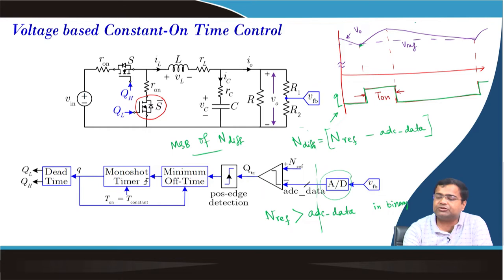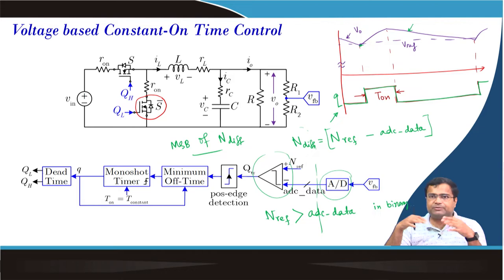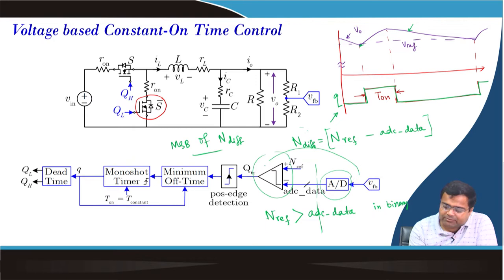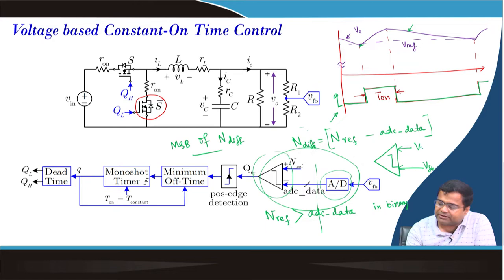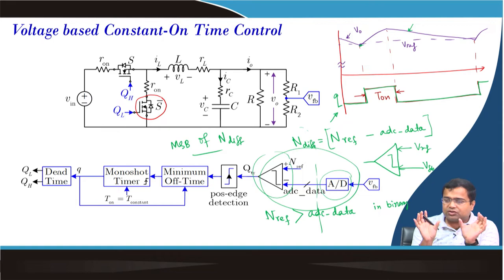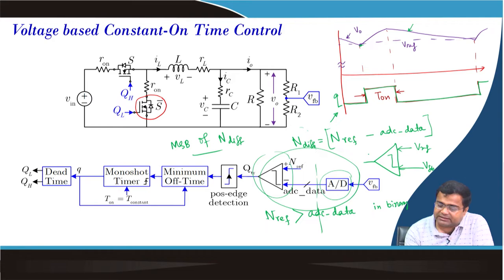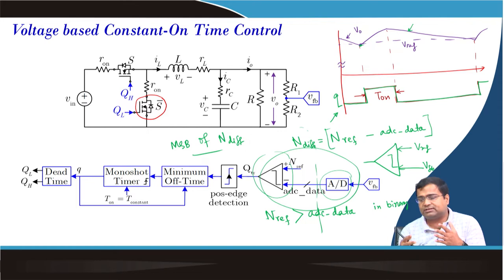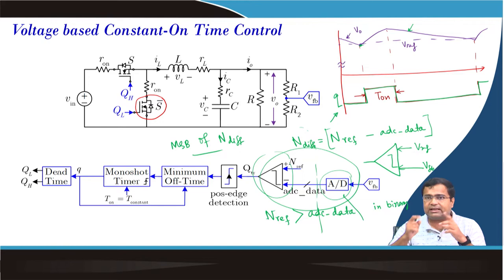As long as the MSB of n_difference is 1, that means your ADC data is higher, meaning your output voltage is above the reference voltage. Though it is a comparator, in digital, if you want to compare two numbers you can simply subtract and look at the MSB. Virtually the whole system will look like an analog comparator where you have a feedback voltage and a reference voltage, because we are only dealing with the MSB of this error.